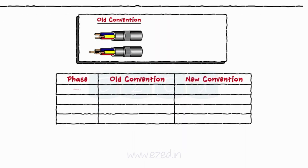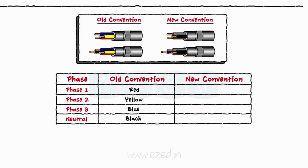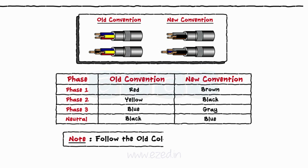Previously, these signals were represented in red, yellow, and blue colors. But nowadays they are represented as brown, black, and grey. The fourth blue color wire is called the neutral wire, which we will see later. But we will follow the old color conventions only.